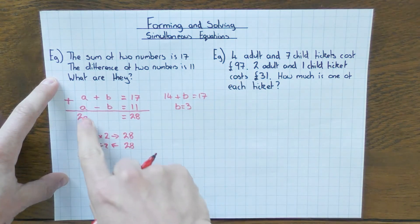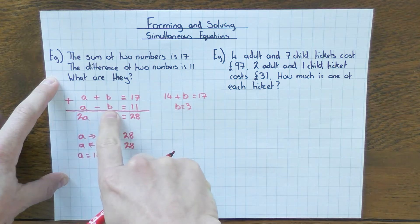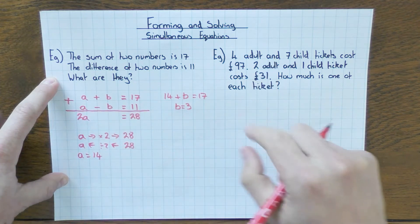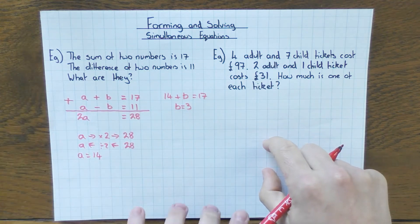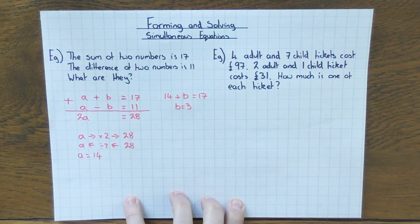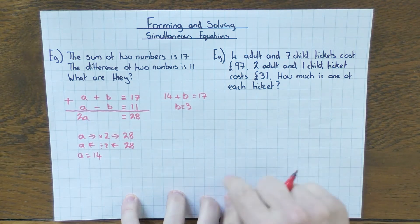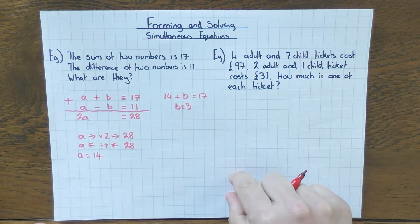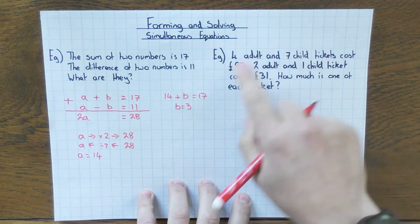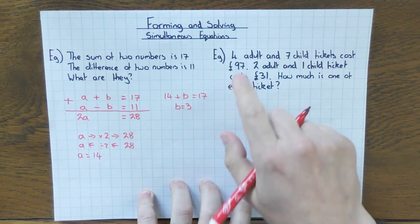Double-check: 14 take away 3 equals 11 — yes, it works. You've found your two numbers. Let's have a look at another example. This is a very common type of question you'll see in the exam.